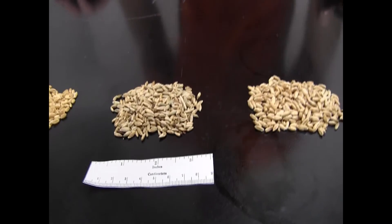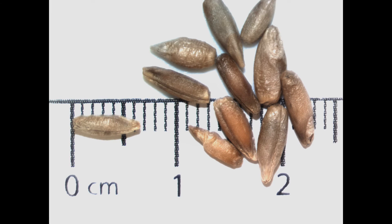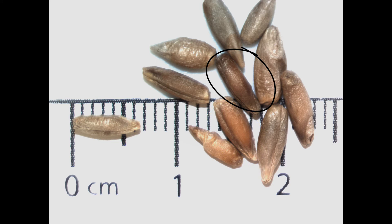Now let's move into another small grain: rye. Rye seed is very slender in its shape and also has a little bit of a crinkle-type appearance. Our wheat samples don't really have that crinkle look. For rye, the color can vary quite a bit — ranging from a light brown similar to wheat all the way to very dark — but overall rye seed will have a kind of blue hue to it, making it very distinguishable.